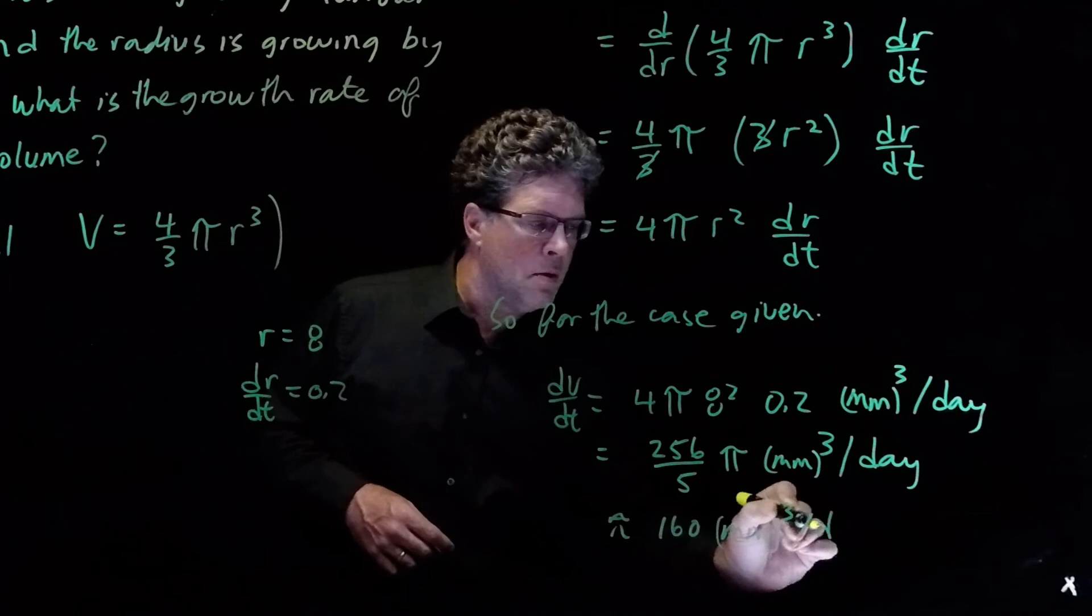So that sounds like a lot more than the radius, which was 0.2 millimeters a day. And so we can see this tumor is growing in a measurable way in the three dimensions as well as in the radial dimension.